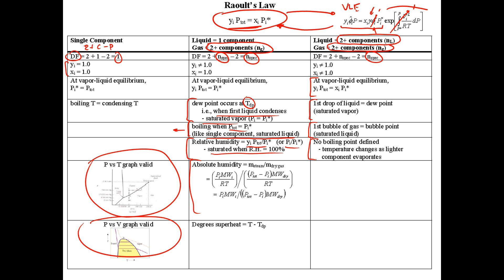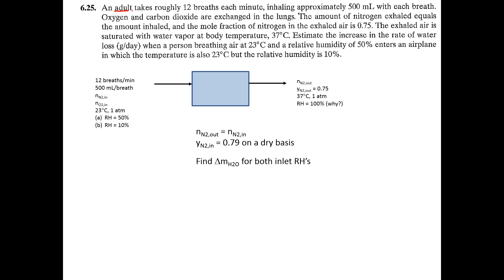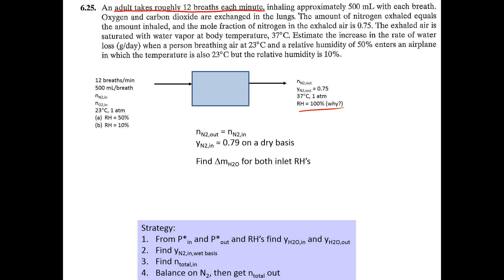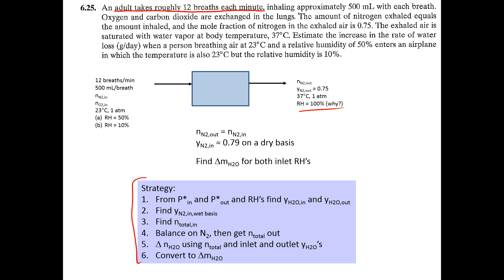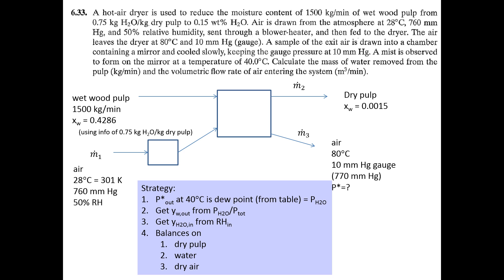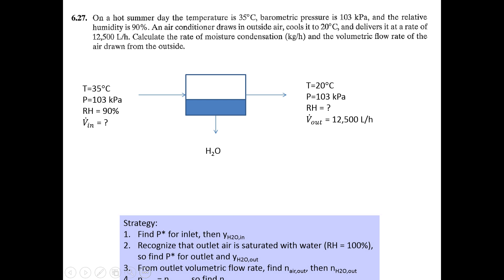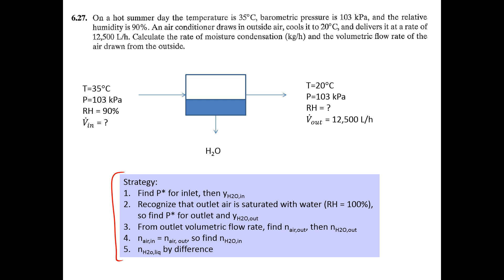For multi-component systems there's no single boiling point defined, because the temperature changes as lighter components boil off. Coming up in the homework: a breathing problem calculating how much water is lost and the relative humidity of exhaled breath, and problem 627. Strategies for those calculations are provided. Today's focus was air and water; next time we'll cover multi-component liquid and vapor systems.